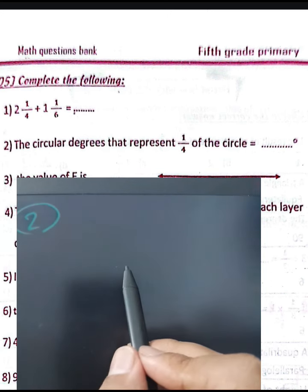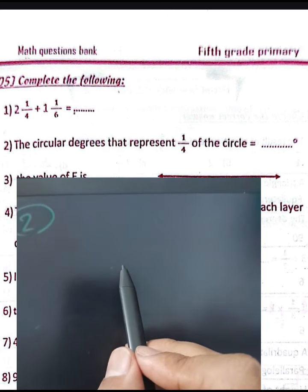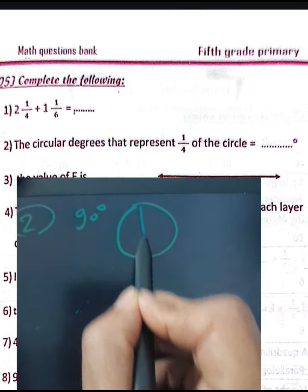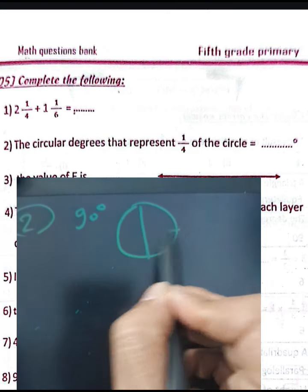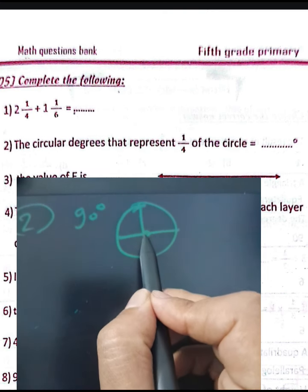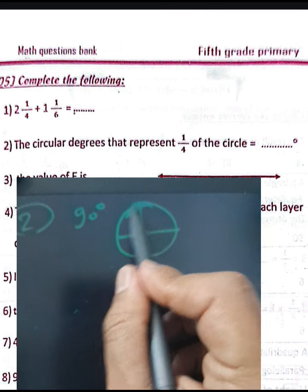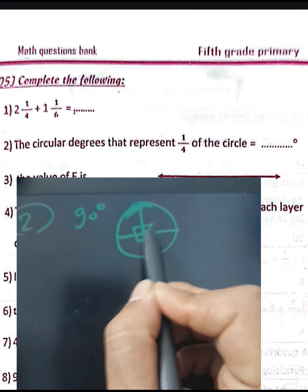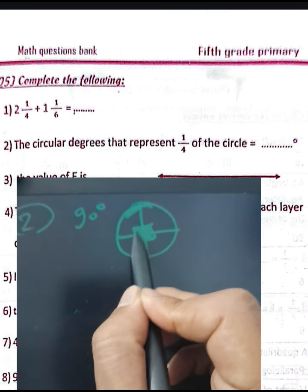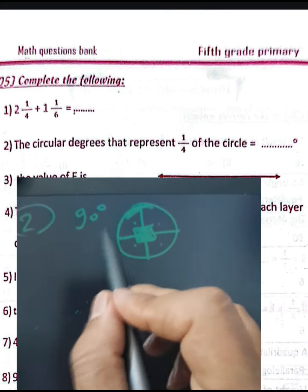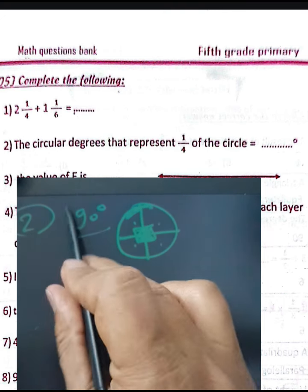Number two: the circular degree representing one-fourth of a circle equals 90 degrees. The sum of all angles at the center of a circle is 360 degrees. Dividing by 4: 360 divided by 4 equals 90 degrees.